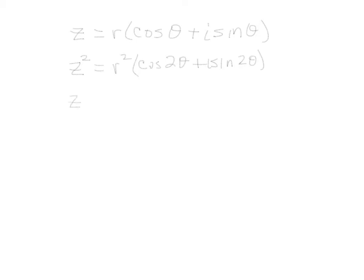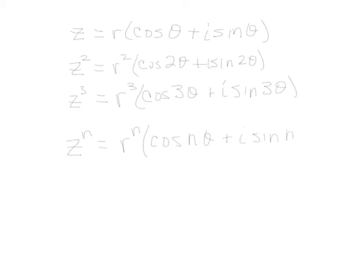What happens if we have to the third power? We want to cube our complex number. We take our modulus and cube it. We have three thetas inside that we would be adding together, so that would just tell us cosine 3 theta plus I sine 3 theta. Now it's not going to take a rocket scientist to figure out the general formula if we want to raise it to the nth power. All we're going to do is take our R raised to the nth power, multiply by cosine n times theta, and we'll have I times sine n theta.